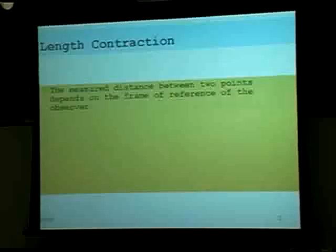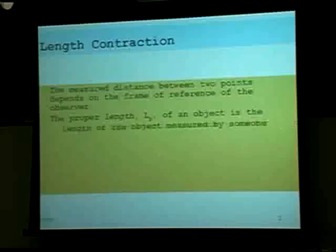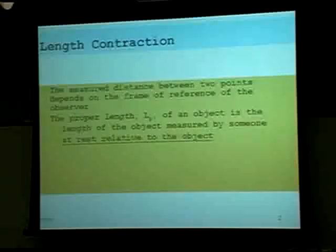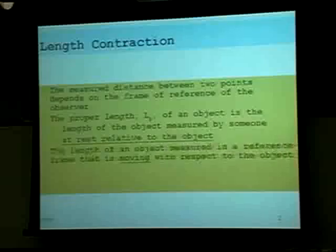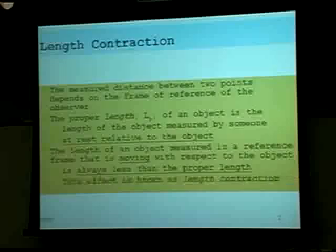Length and pressure. The measured distance between two points depends on the frame of reference of the observer. The proper length, which we designate as L sub P, of an object, is the length of the object measured by someone at rest relative to the object. The length of an object measured in a reference frame that is moving with respect to the object is always less than the proper length. This effect is known as length contraction.